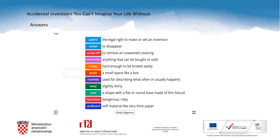The correct answers are: patent — the legal right to make or sell an invention; vanish — to disappear; scrape off — to remove an unwanted covering; commodity — anything that can be bought or sold; crispy — hard enough to be broken easily; booth — a small space like a box; routinely — used for describing what often or usually happens; waxy — slightly shiny; cone — a shape with a flat round base made of thin biscuit; hazardous — dangerous or risky; cardboard — stiff material like very thick paper.